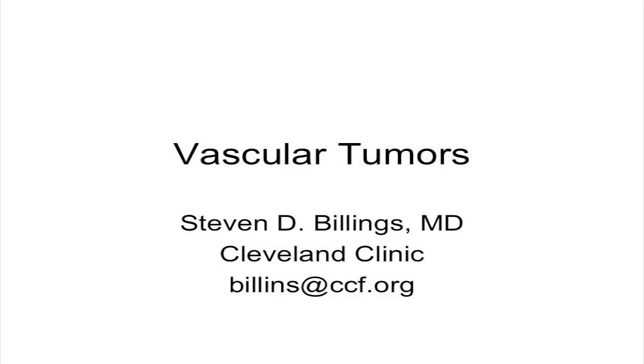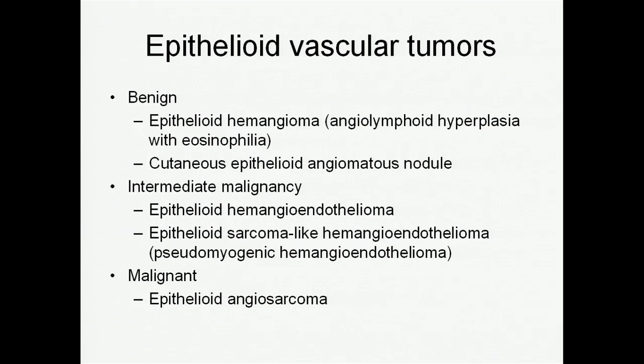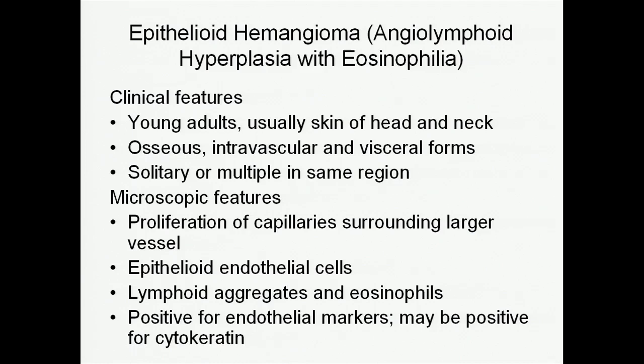I'm going to talk about vascular tumors — primarily cutaneous vascular tumors, because that's where you actually see most of them. I'm going to start with epithelioid vascular tumors, including epithelioid hemangioma, otherwise known as angiolymphoid hyperplasia with eosinophilia, a relatively new entity called cutaneous epithelioid angiomatous nodule, then we'll talk about tumors of intermediate malignancy, and we'll end with epithelioid angiosarcoma.